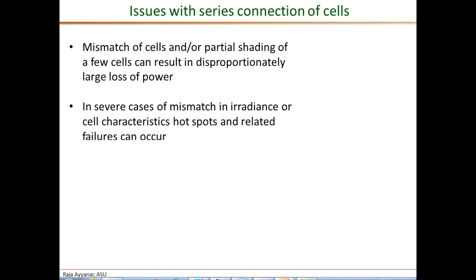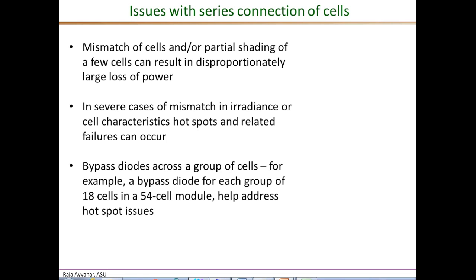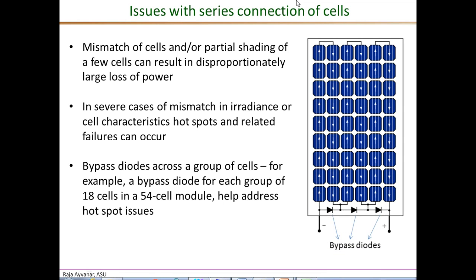In severe mismatch cases, not only is power lost but negative voltages can appear, leading to hot spot failures. To address the hot spot issue, module manufacturers use bypass diodes. For example, in a 54-cell module, the cells are divided into three groups of 18 cells each, with one bypass diode across each group. This prevents negative voltages from appearing across any group and thereby limits hot spot related failures to some extent.